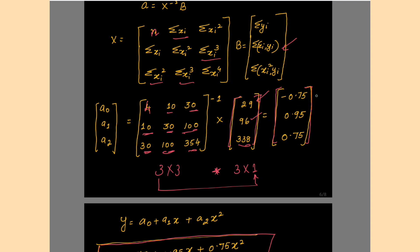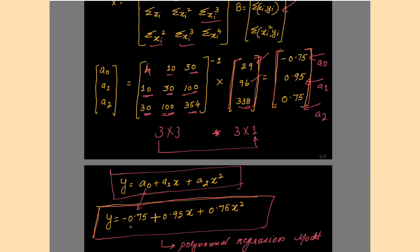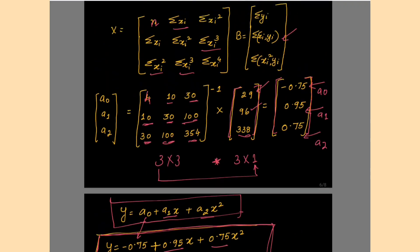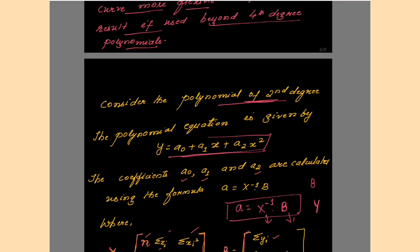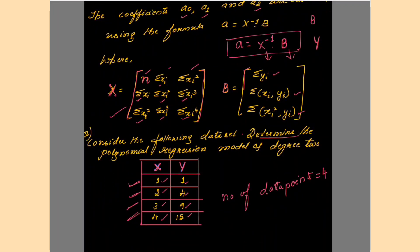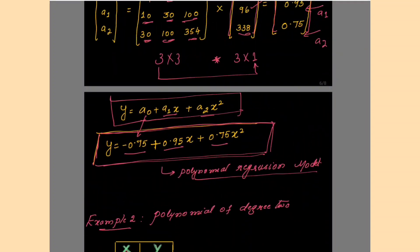The first element of the result is a₀, the second is a₁, and the third is a₂. Write down the equation: ŷ = a₀ + a₁x + a₂x². Substituting: a₀ = −0.75, a₁ = 0.95, a₂ = 0.75. After substituting, whatever you get is your polynomial regression model. This session covered a polynomial equation of second degree — all the numerical and formula work pertains to this second degree polynomial.